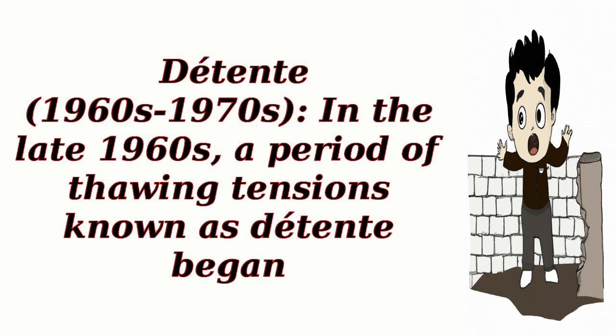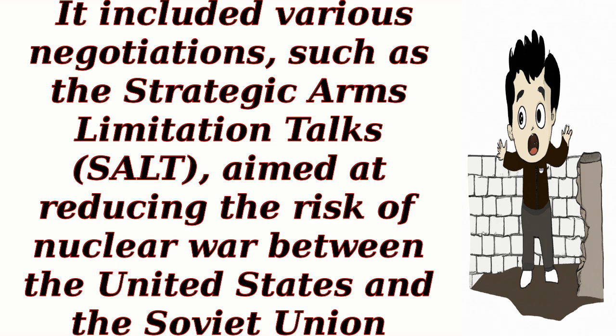Détente, 1960s to 1970s: In the late 1960s, a period of thawing tensions known as détente began. It included various negotiations, such as the Strategic Arms Limitation Talks (SALT), aimed at reducing the risk of nuclear war between the United States and the Soviet Union.